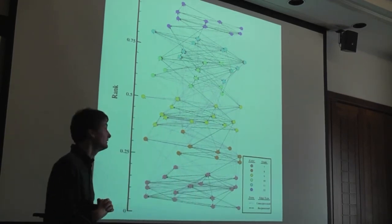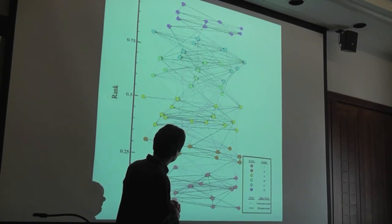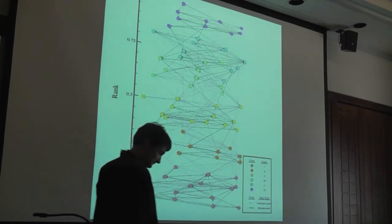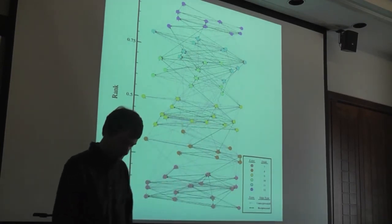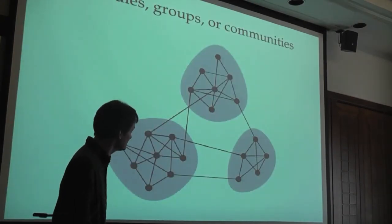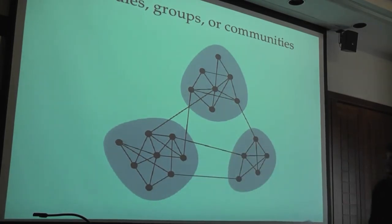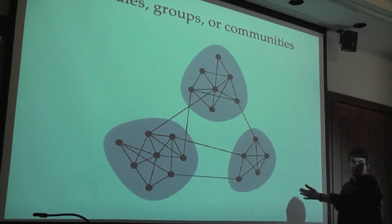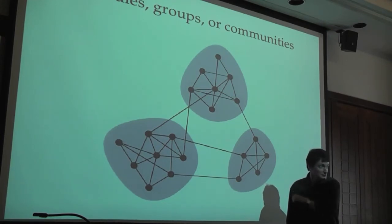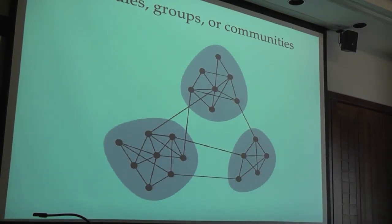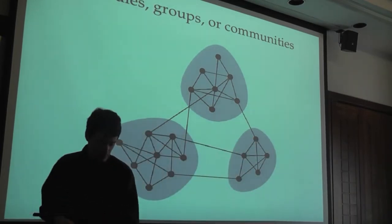I want to spend most of the remaining time talking about another area I've been working on: spectral methods for analyzing network data. This brings me back to the idea of communities in networks. A community is simply a clump of nodes with lots of connections within the clump and few connections between clumps. This could be a group of friends who mostly know each other with few ties to other groups. This is a common structure in many different kinds of networks, not just friendship networks.